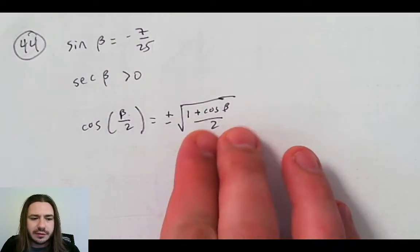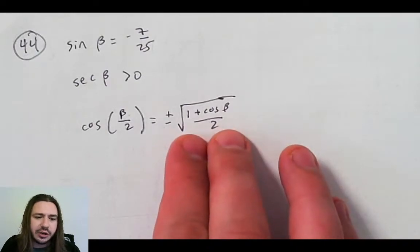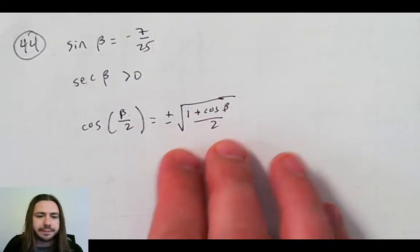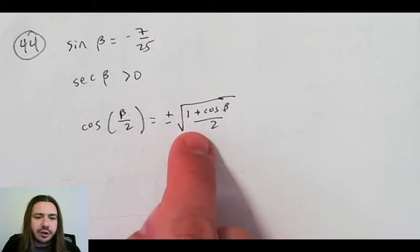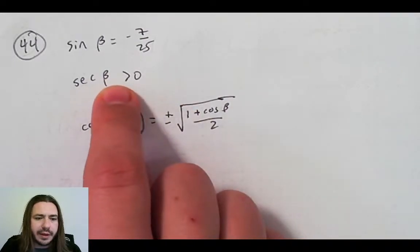like the double angle formula, sum and difference formulas, that you just have to not necessarily know off the top of your head, but know where to find them, how to use them. So we will have to answer, is this positive or negative? We'll get to that in a minute. But first, let's try to figure out a little bit more about beta.